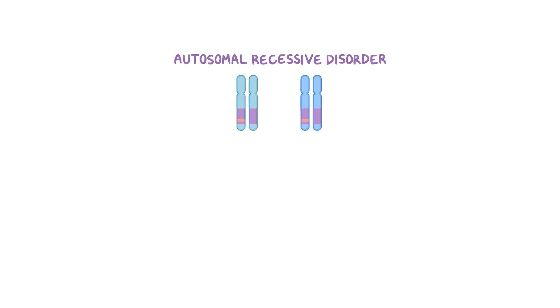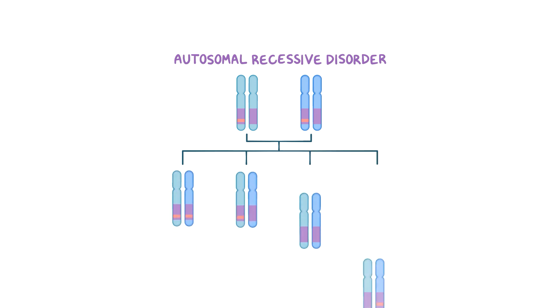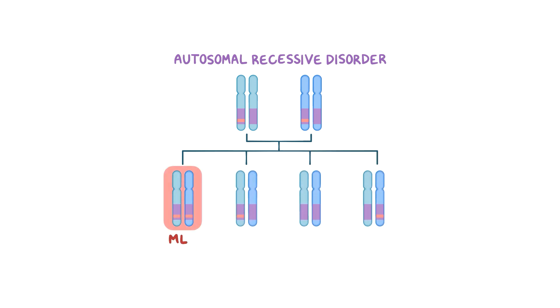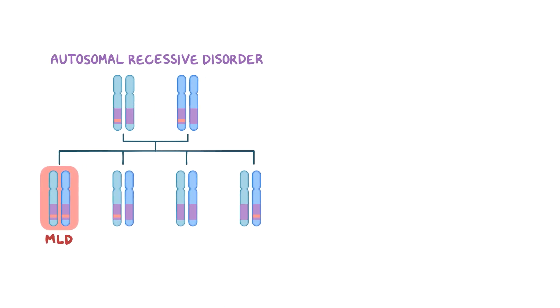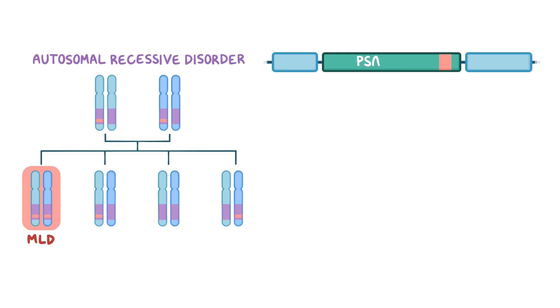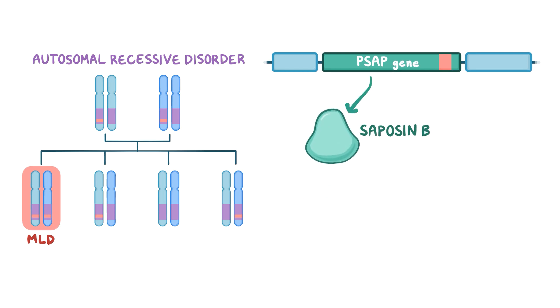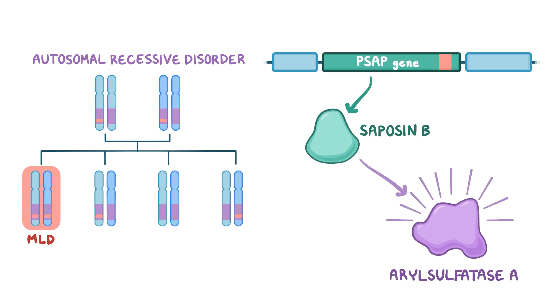MLD is an autosomal recessive disorder, which means that two mutated copies of the gene, one from each parent, are needed to develop the disease. In rare cases, MLD can also be caused by mutations in the PSAP gene, which codes for saposin B, a protein that activates arylsulfatase A.